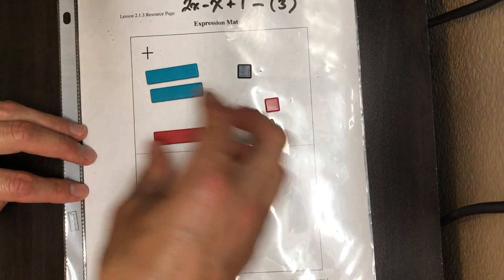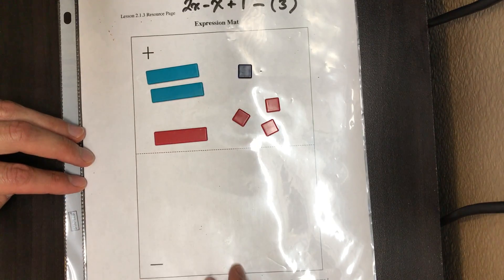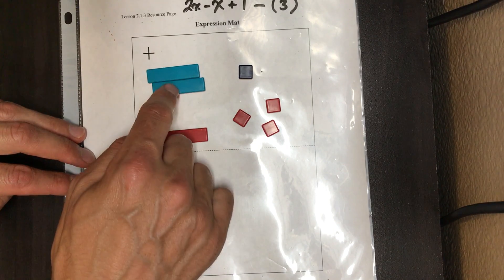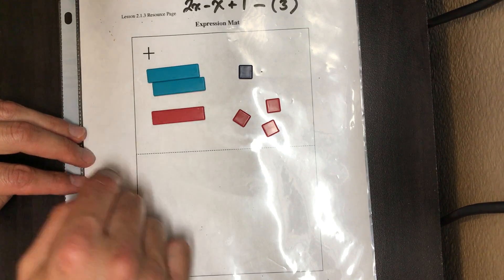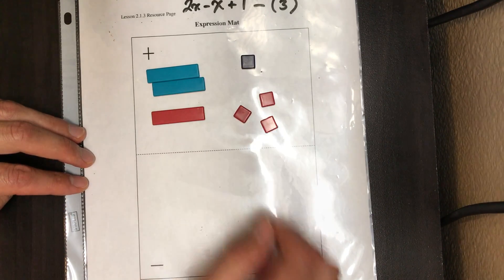Now once everything's in this section here, we're thinking okay, what do we got here? We've got, again, two x's, a negative x, positive one, and three negative ones.